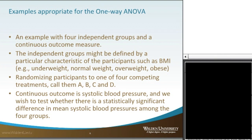You could do a trial where you're randomizing patients to one of four competing treatments — A, B, C, and D. The continuous outcome, which is our dependent variable, could be, for example, systolic blood pressure. And we wish to test whether or not there's a statistically significant difference in the mean systolic blood pressure amongst the four groups receiving four different types of treatment.